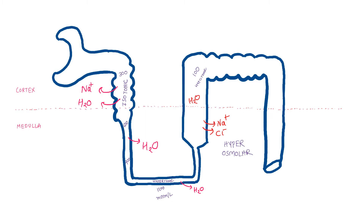From the early distal tubules, about 8–10% of solutes are reabsorbed but not the water, and the fluid inside the lumen will still remain diluted. So this volume of water present inside the lumen of the thick ascending limb of the loop of Henle and early distal tubules is called free water clearance, as it is going to be excreted. We can call it positive free water clearance as the fluid is diluted.